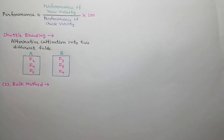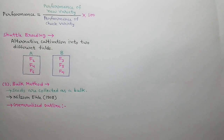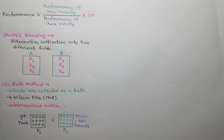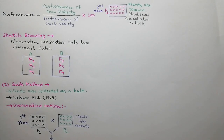The second method we will discuss is the bulk method. In this method, seeds of segregating generations are collected as a bulk. This method was first used by Nielsen Ehle in 1908. In the first year, parents P1 and P2 are hybridized and hybrid seeds are collected. In the second year, hybrid seeds are grown in a field at particular distances, and the seeds of all the plants are collected as a bulk.